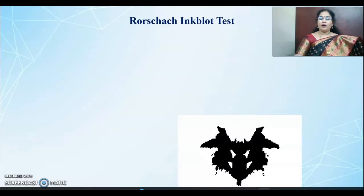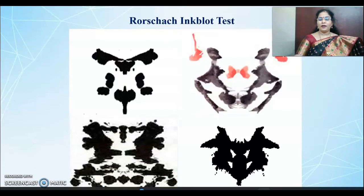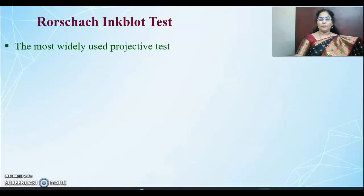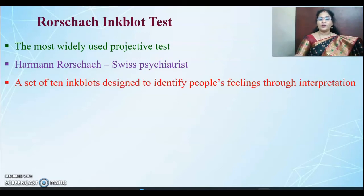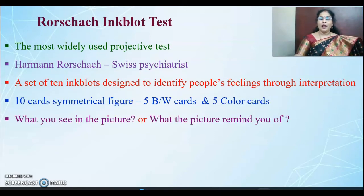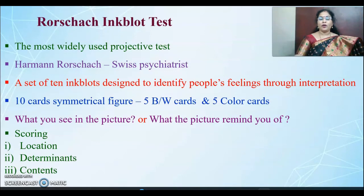For the Rorschach inkblot test, inkblot cards are shown one after the other and the people are asked different questions. It is the most widely used projective technique. The founder of this technique is Herman Rorschach, who was a Swiss psychiatrist. A set of 10 inkblot design cards — five black and white and five colored — are given to the people to identify their true feelings through interpretation. Two questions will be asked: 'What do you see in the picture?' and 'What does the picture remind you of?' Scoring is given with regard to location, determinants and content of what the client or patient describes.